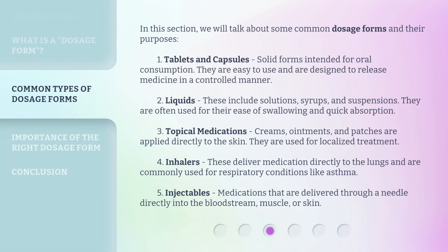We will talk about some common dosage forms and their purposes. First, tablets and capsules are solid forms intended for oral consumption. They are easy to use and are designed to release medicine in a controlled manner. Second, liquids — these include solutions, syrups, and suspensions — are often used for their ease of swallowing and quick absorption.